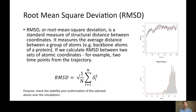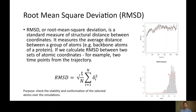Next, the root mean square deviation (RMSD) is a standard measure of structural distance between coordinates — it measures the average distance between a group of atoms, for example backbone atoms of a protein. You might want to use this to check the stability and conformation of selected atoms over a simulation. Measuring the RMSD between an initial conformation and all frames produces a time series and a histogram in Galaxy. If the histogram shows a single peak, this indicates one stable state, which is the expected outcome for the type of simulation we are doing here.